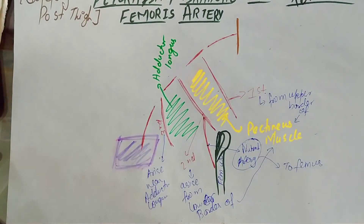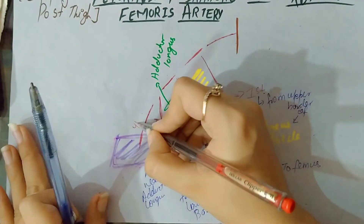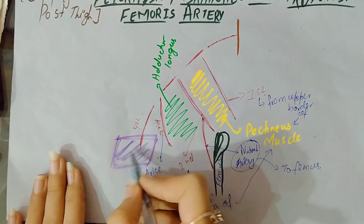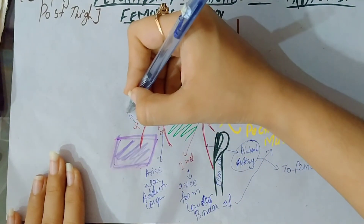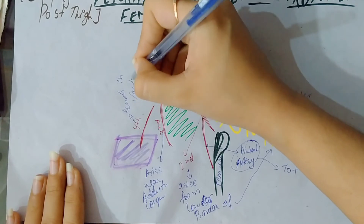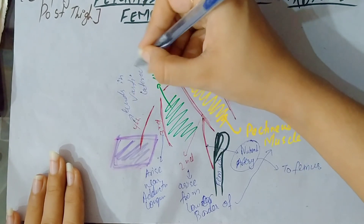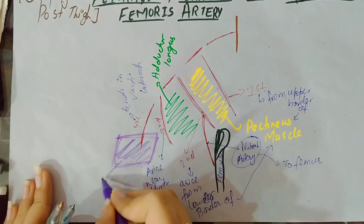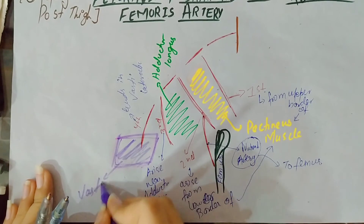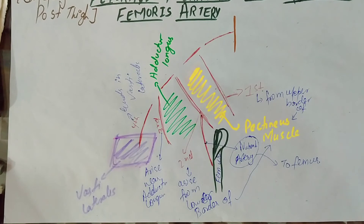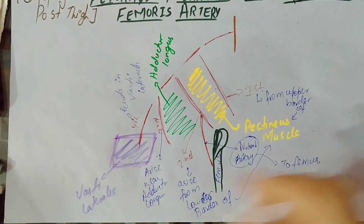We have our fourth and last perforating artery, and it ends or terminates in the vastus lateralis muscle. The purple one shown here is the vastus lateralis. That's all about the perforating branches of the profunda femoris artery.